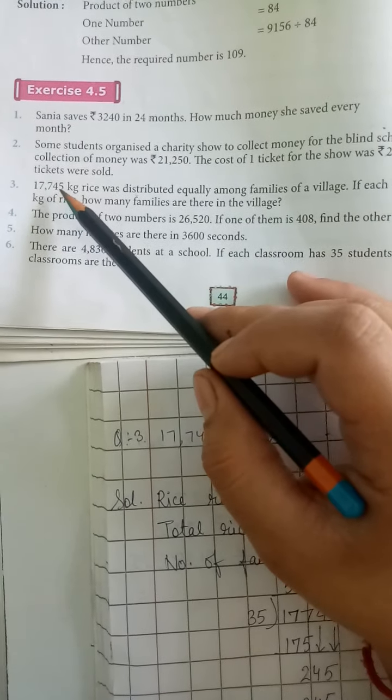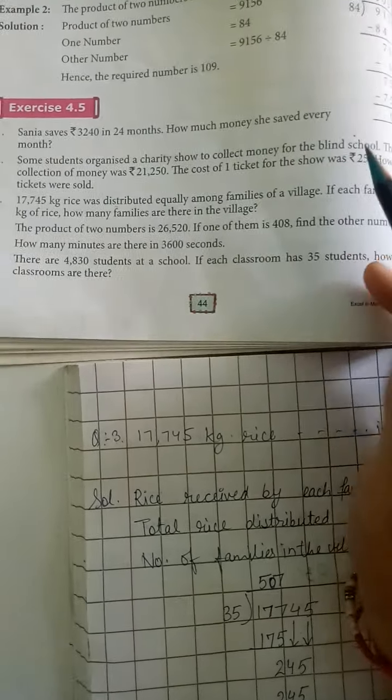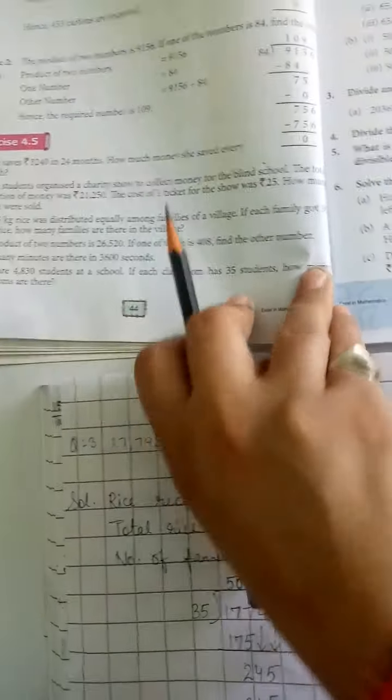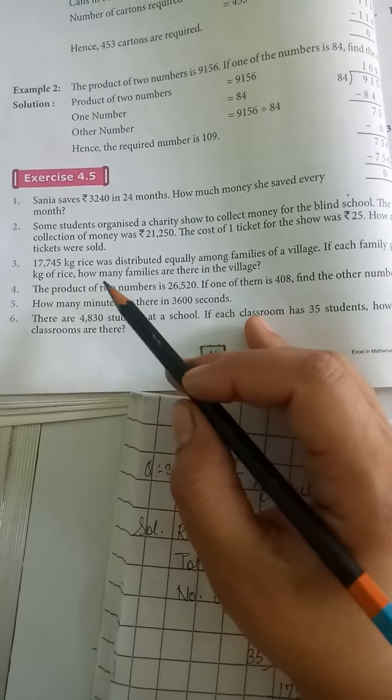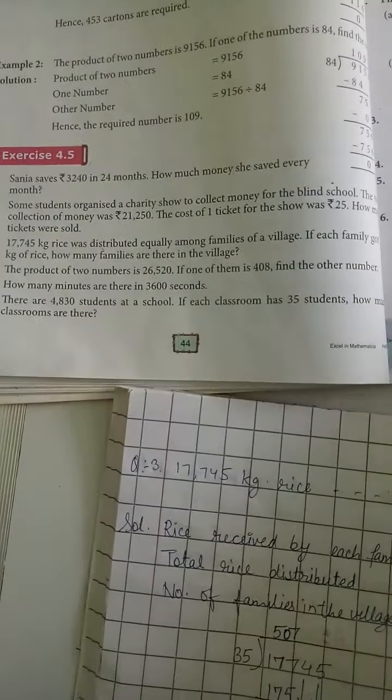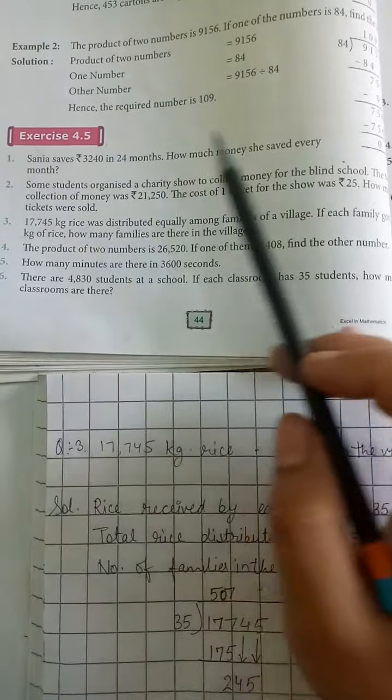Let's move to the next question. Question number 3: 17,745 kg rice was distributed equally among families of a village. If each family gets 35 kg of rice, how many families are there in the village?